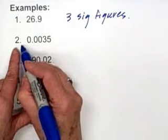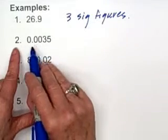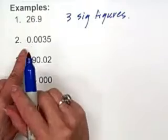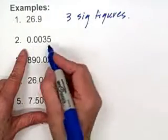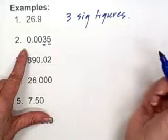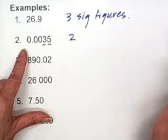In this question number 2, again, we have the zeros to the left of the number. These zeroes are simply placing the decimal, so we do not count them. So we only count the digits 3 and 5. So we have two significant figures here.